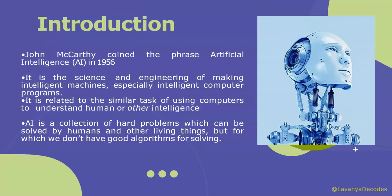Now, what is intelligence? According to the father of AI, John McCarthy, it is the science and engineering of making intelligent machines, especially intelligent computer programs. AI is accomplished by studying how the human brain thinks and how humans learn, decide, and work while trying to solve a problem, and then using the outcomes of this study as a basis for the development of intelligent software systems.